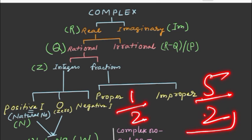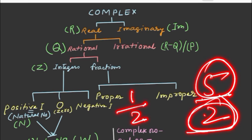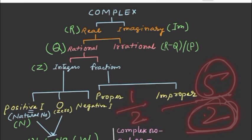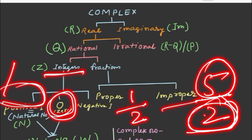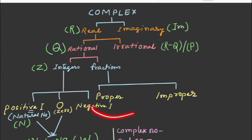An improper fraction means the numerator is greater than the denominator. Integers include 0, positive integers such as 1, 2, 3, etc., and negative integers such as minus 1, minus 2, minus 3, etc.